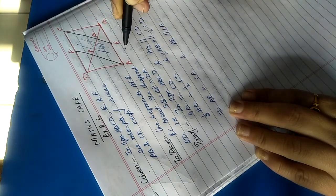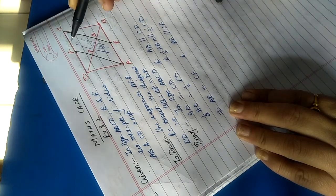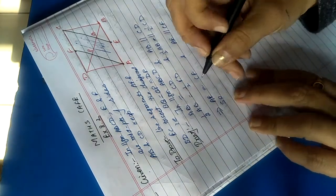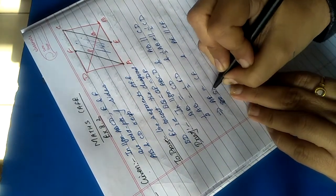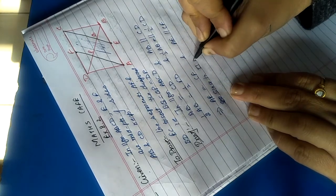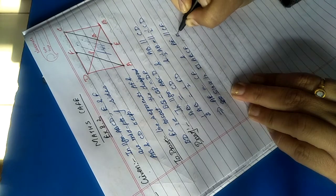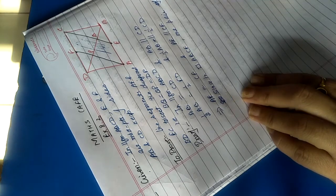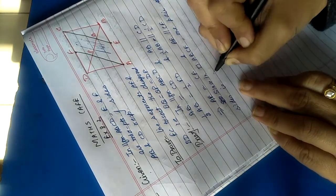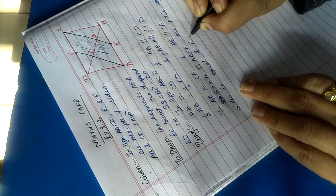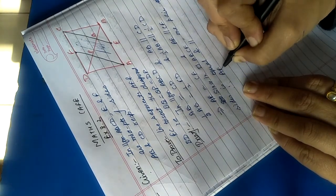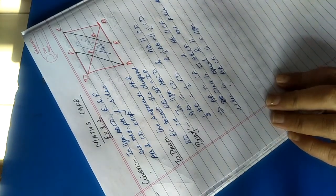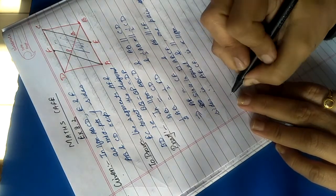Now in this quadrilateral, one pair is both equal and parallel, so it becomes a parallelogram. Since in quadrilateral AECF, one pair of opposite sides is equal and parallel, therefore AECF is a parallelogram.